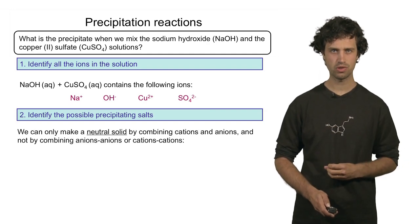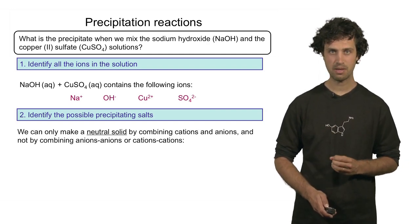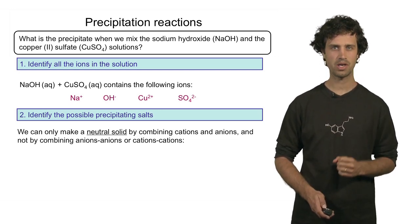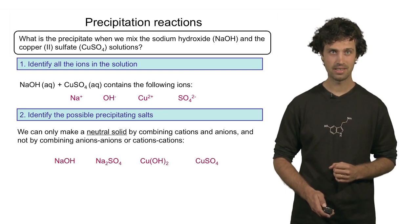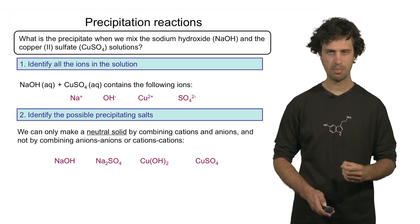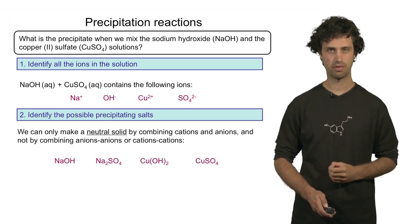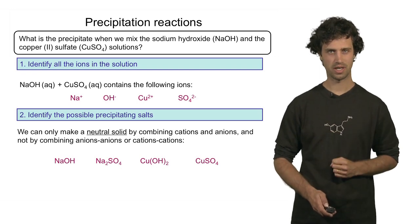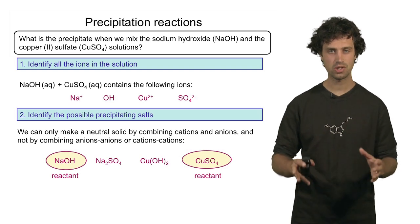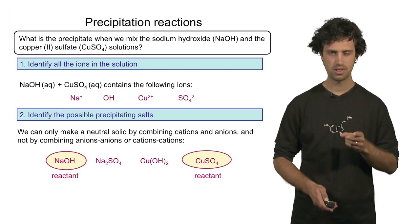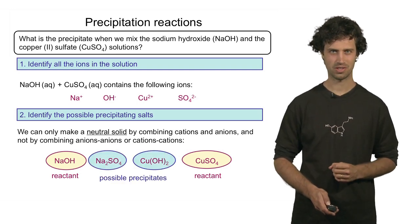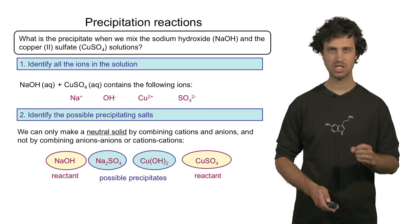The next step is to find out which salts we can form by combining these ions. Remember, salts are neutral compounds obtained by combining a positive ion with a negative ion. We can make the following combinations: sodium hydroxide, sodium sulfate, copper hydroxide, and copper sulfate. Now the first and the last one are actually the reactants. These are salts that are soluble. The two new salts, which are sodium sulfate and copper hydroxide, are the possible precipitates. But which one of these is the precipitate?